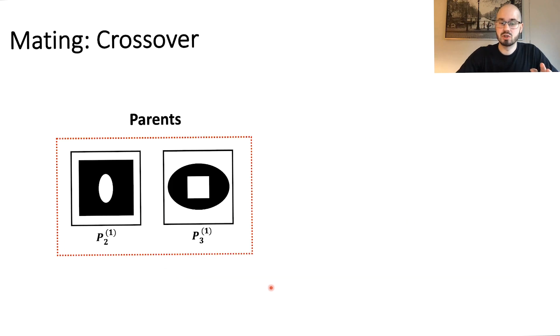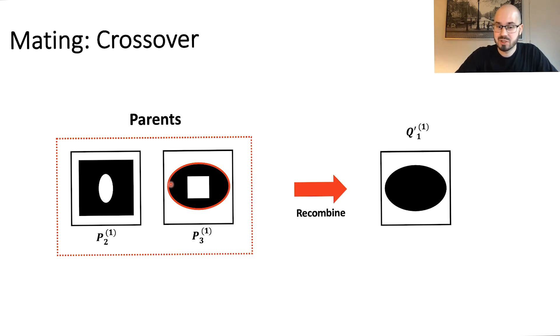In the crossover, we take the two selected parents and we create a new individual. And a new individual is created by recombining properties of the parents. So let us say we are taking the outer black ellipse here from the second parent and draw it on our canvas. And then we take the inner white ellipse from the first parent and also copy it over. So this is now a new individual. It's a new solution combined from both parents. So we are taking properties from both parents, somehow we combine them and we have a new solution.